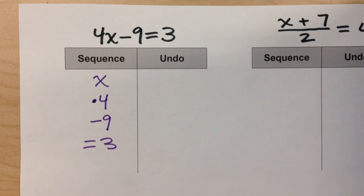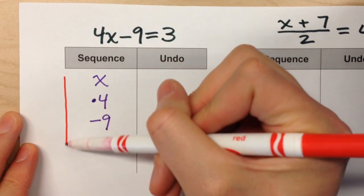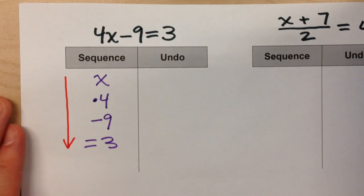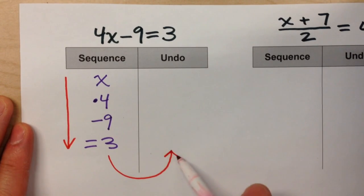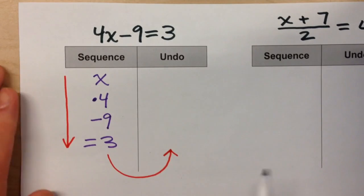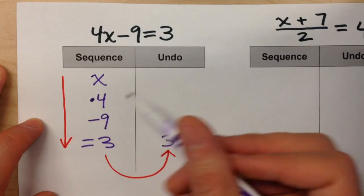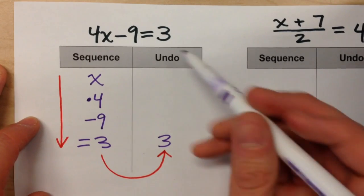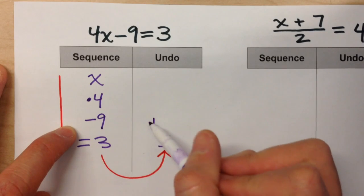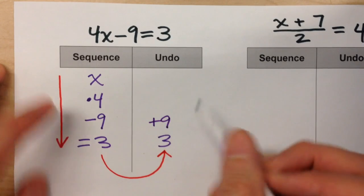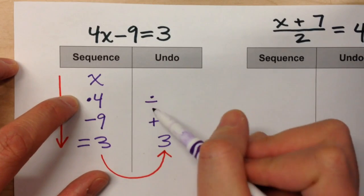So that sequence column basically lists what happened to x in the order that it occurred. Now, to solve it, we take our 3 and flip it over into the undo column. We're going to undo each of the actions that happened to x from the sequence column. So we subtracted 9 last, so we're going to add 9. And then, it says multiply by 4. To undo that, we're going to divide by 4.